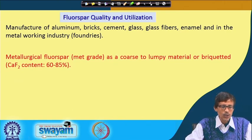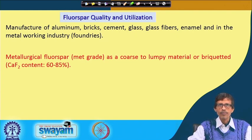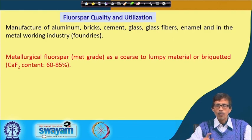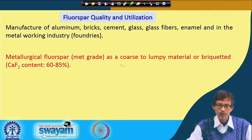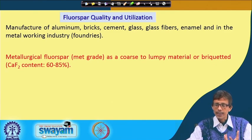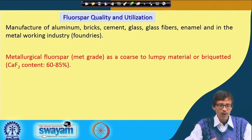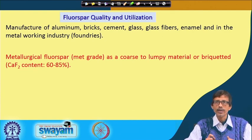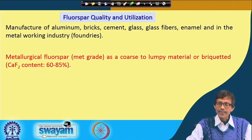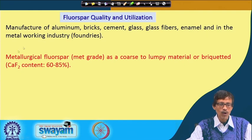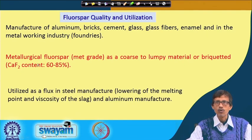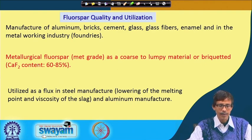One quality category is metallurgical grade fluorspar — still calcium fluoride — known as met grade. Met grade is a coarse to lumpy material, sometimes briquetted material. If it is moistened and high pressure is applied, you get a briquetted form with calcium fluoride content of 60 to 85 percent, which can be utilized for metallurgical engineering purposes.